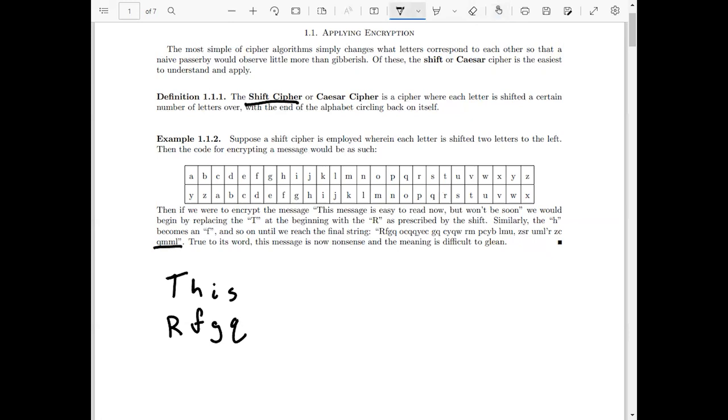At this point, you can see we're resulting in absolute utter nonsense. If you were just passing by, this wouldn't be differentiable at all from just some garbage that someone had written down. However, to somebody who's familiar with the cipher, someone who knows what they're looking at, reversing this message is quite simple. If we take this last word right here, q, m, m, l, we've got the q maps to s, those double m's each map to an o, and that l maps back up to an n. So it's quite easy to reverse this encryption if you know what you're doing.